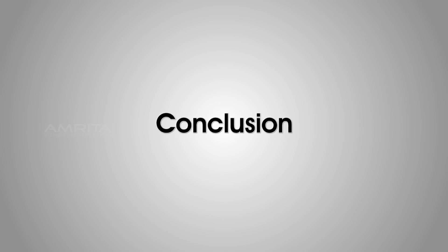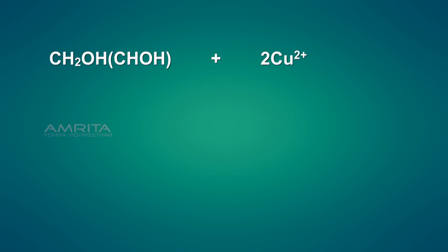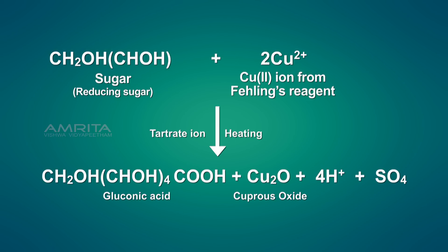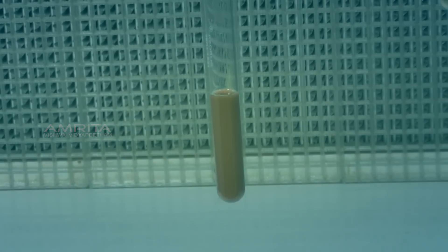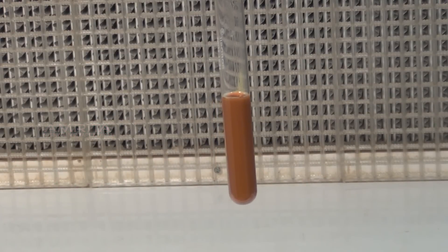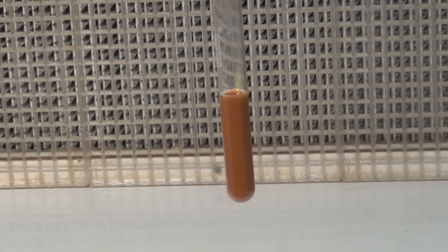Conclusion: The cupric ion present in the Fehling's solution is reduced on boiling by the reducing substance, sugar, to form the brick red coloured precipitate of cuprous oxide. Therefore, sugar is present in the urine sample.